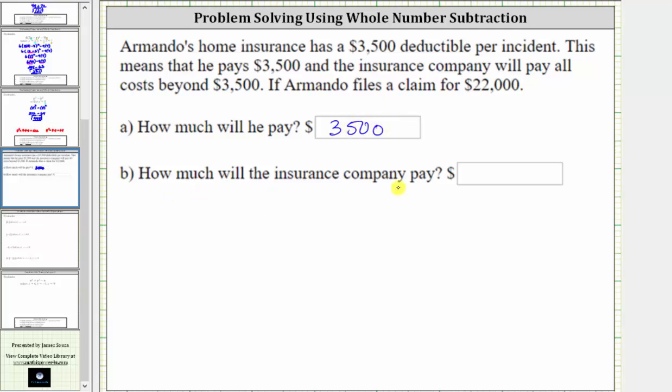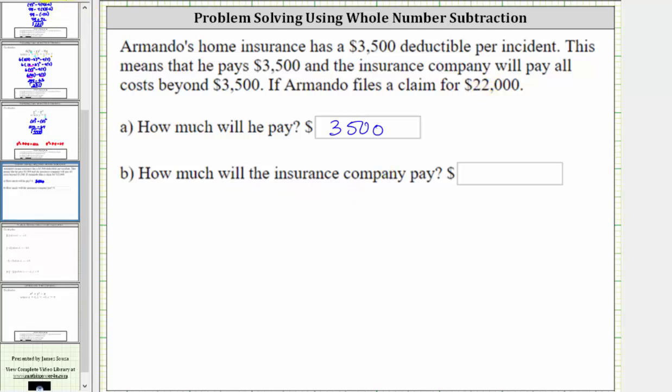The next question is how much will the insurance company pay? The insurance company will pay the claim amount minus the deductible, and therefore the insurance company will pay $22,000 minus $3,500.